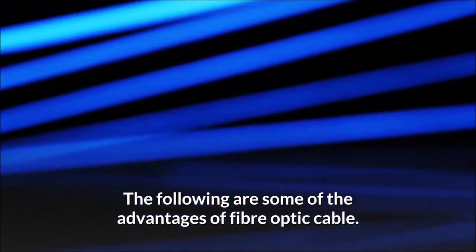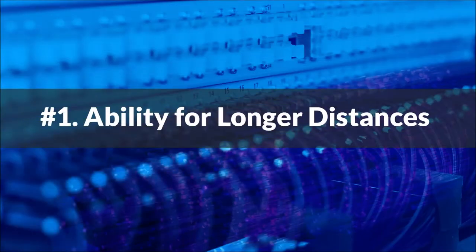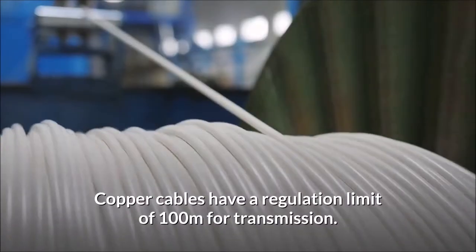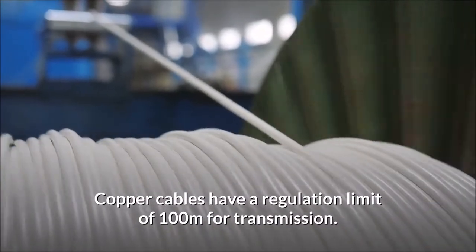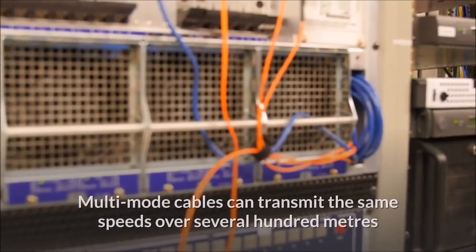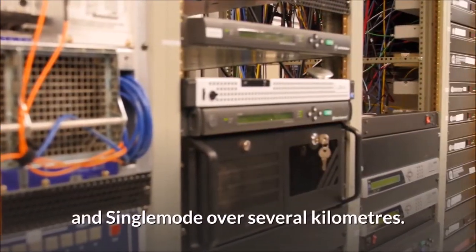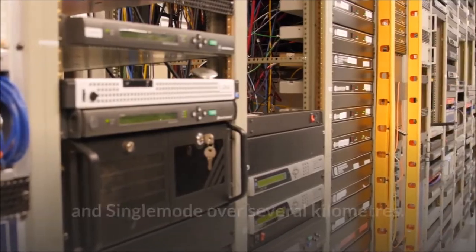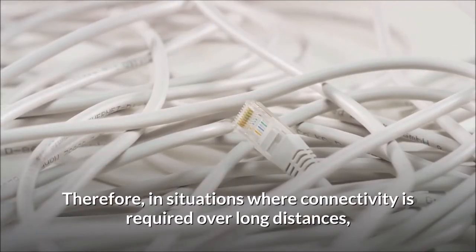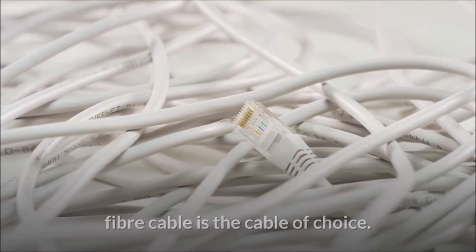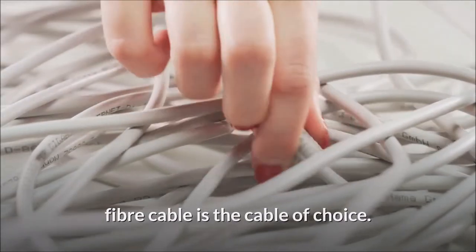8 Advantages of Fiber Optic Cable. The following are some of the advantages of fiber optic cable. Number 1: Ability for Longer Distances. Copper cables have a regulation limit of 100 meters for transmission. Multi-mode cables can transmit the same speeds over several hundred meters and single mode over several kilometers. Therefore, in situations where connectivity is required over long distances, fiber cable is the cable of choice.